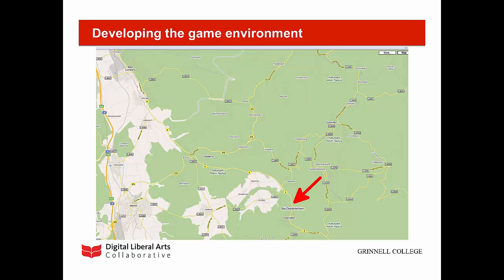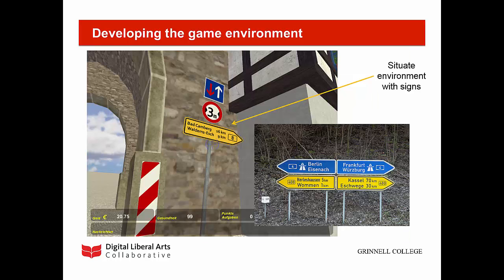And thus was born the fictional German town of Bad Oberdinkelheim, located southeast of Bad Kamberg on German Federal Highway 8, a historical road in southwestern Germany that has existed since the ninth century. Here is a modified Google map of the region with Bad Oberdinkelheim indicated by the red arrow. Situating the fictional town in the game environment was accomplished by modified signs based on real-world models, which you can see here in the inset. Other signs indicated dimensions of the game environment, such as the width of the tower passageway, to give players a sense of scale.